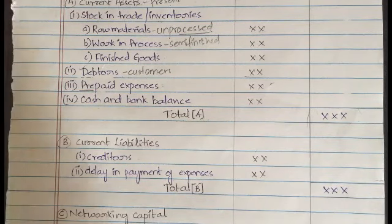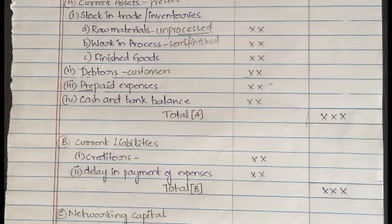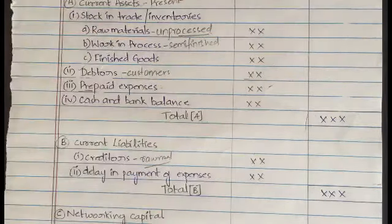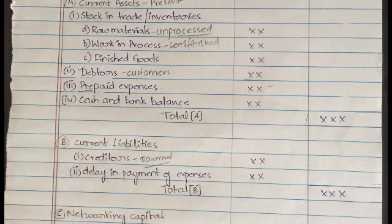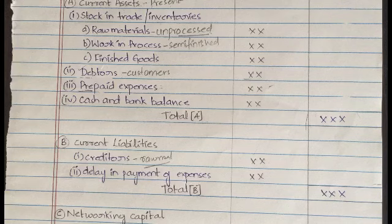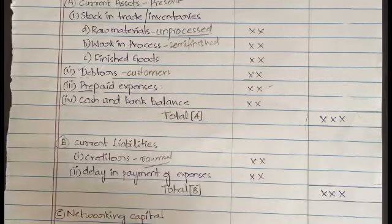Creditors are the people from whom the company purchases raw material, but they will pay the amount later. They purchase the material but the amount is not paid at that time — they will be giving the money later. Like sometimes in a shop, if online payment is not working or we are not having money, we say 'I will give you money later.' In the same way, the company purchases raw material but does not give the money right away — those are the creditors.